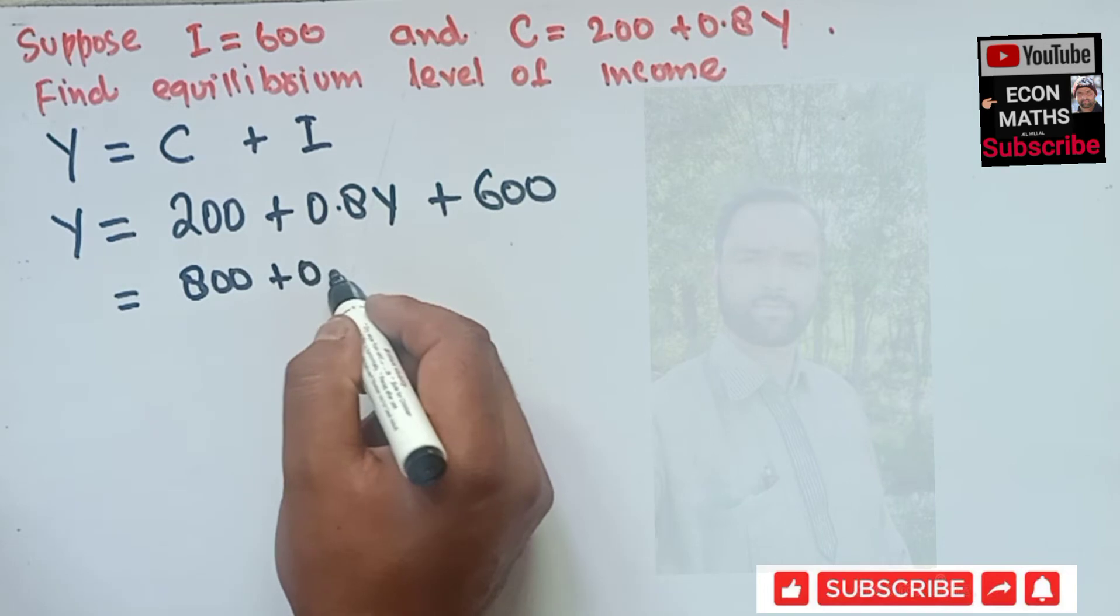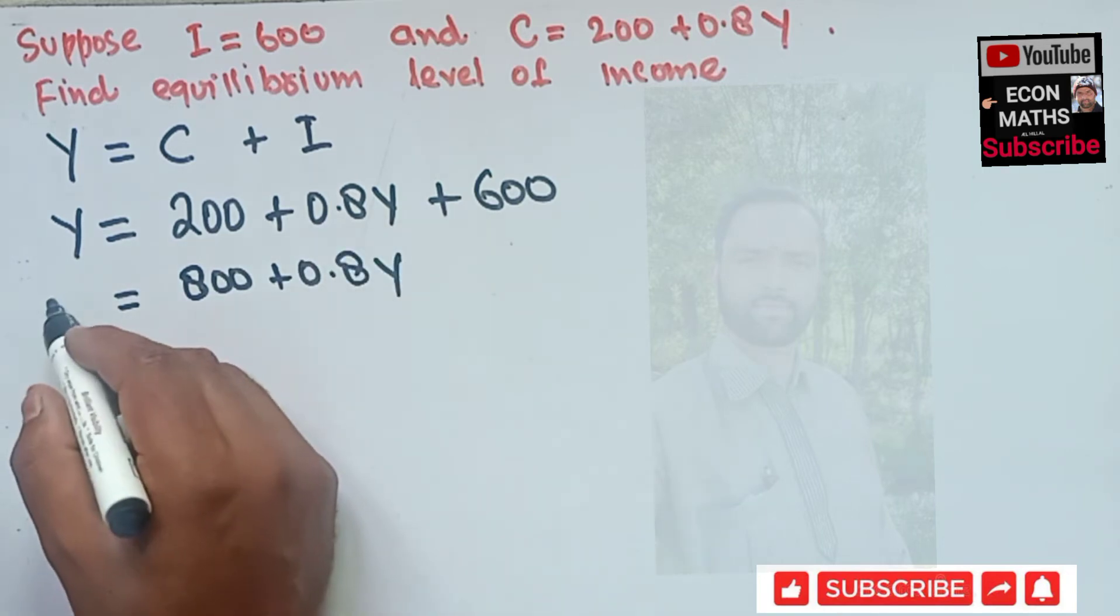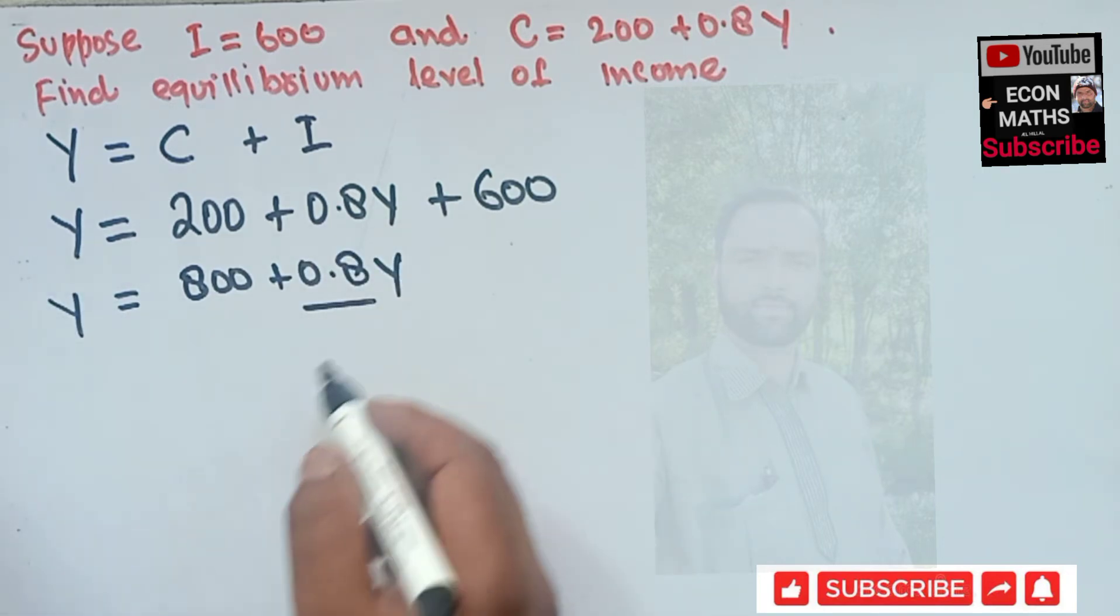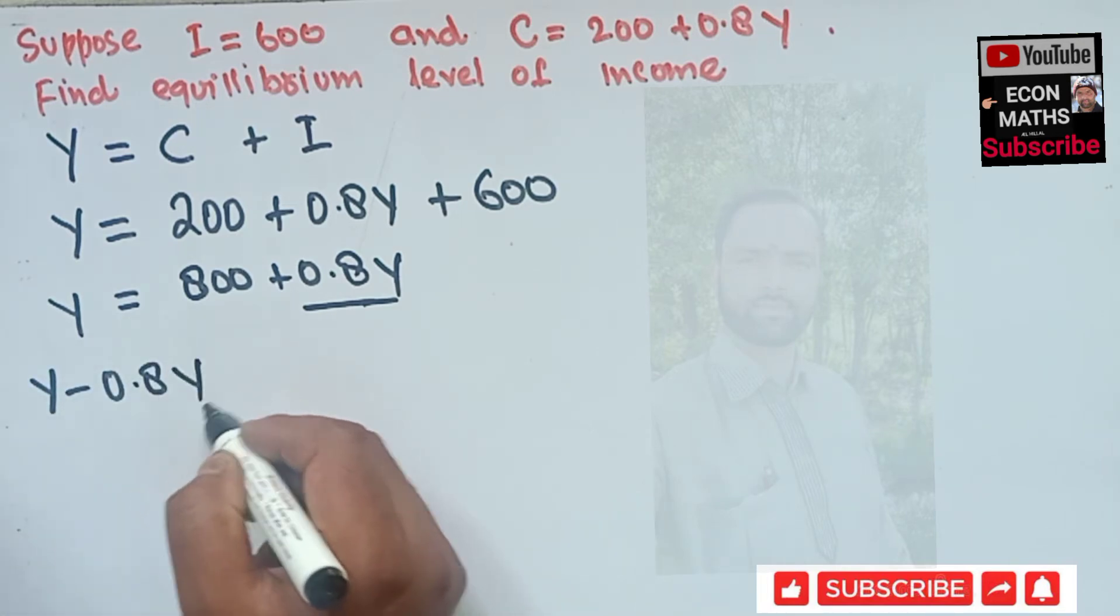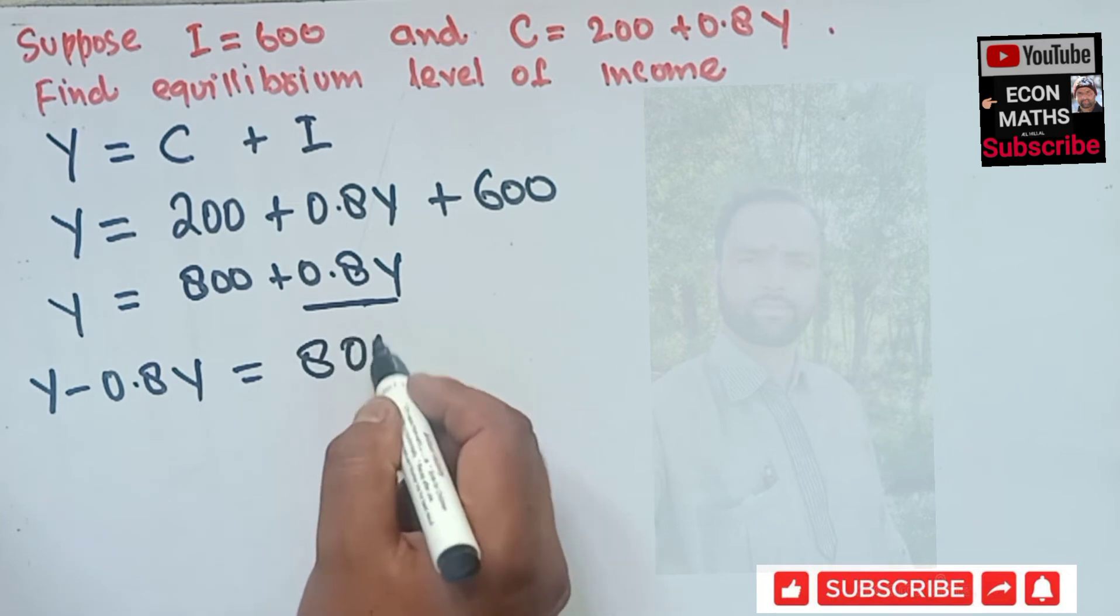So if we solve, this is 600 plus 200 is 800, plus 0.8Y. If we will transpose this term to the LHS, this will become Y minus 0.8Y is equal to 800.